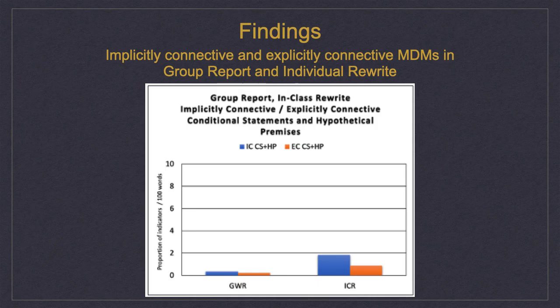In frame four, which involved the group report and the individual in-class rewrite of that report, although there was a decrease in the general use of markers, there was an increase in the use of both implicitly and explicitly connected conditional statement markers. Because, as Highland 2005 points out, markers often carry out dual or multiple communicative functions, the greater increase in implicitly connective conditional statement markers is not regarded as a complete loss. It is enough that the use of explicitly connective conditional statement markers also increased to validate further research in this area.